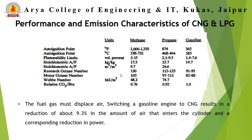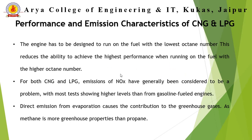The motor octane number is 105 for propane and 111 for methane. The performance of a conventional SI engine is reduced with the use of CNG in terms of power output, but this covers its disadvantages through improved emission characteristics. Switching a gasoline engine to CNG results in a reduction of about 9.3% in the amount of air entering the cylinder, and a corresponding reduction in power, because oxygen available for combustion is reduced due to the gas already occupying space.